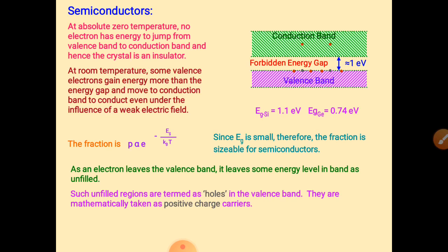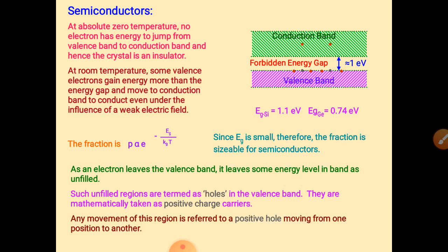Before the transition, the electron was in that place, so the location had negative charge. After the electron moves to the conduction band, there is a deficiency of negative charge at that location. Because of the deficiency of negative charge, the hole is treated as a positive charge. Holes always carry positive charge — whenever there is a deficiency of electrons, we treat that deficiency as a positive charge.